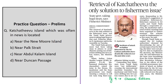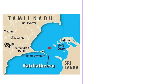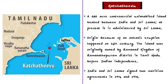The next question is based on Katchatheevu Island. Katchatheevu is a 285-acre controversial uninhabited island located between India and Sri Lanka, near Palk Strait. This island was originally owned by the Ramanad Kingdom of Ramanathapuram district in Tamil Nadu. Before Indian independence, during British rule, this island was administered by both countries. At present, it is administered by the Sri Lankan government. The issue of Katchatheevu first arose in 1921 at a conference to demarcate fisheries lines between India and Sri Lanka.